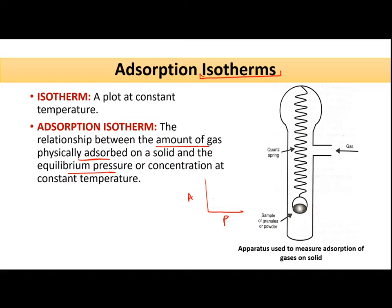The apparatus contains a balance placed in a vacuum system. The solid which is already degassed is placed on this balance, which is held by a quartz spring. As soon as you introduce the gas whose adsorption you want to study over the solid particles, because of adsorption of the gas molecules, the balance will move downward and you note down the reading on a dial. You will get how much gas is getting adsorbed and you can plot it against the pressure of the gas you provide.